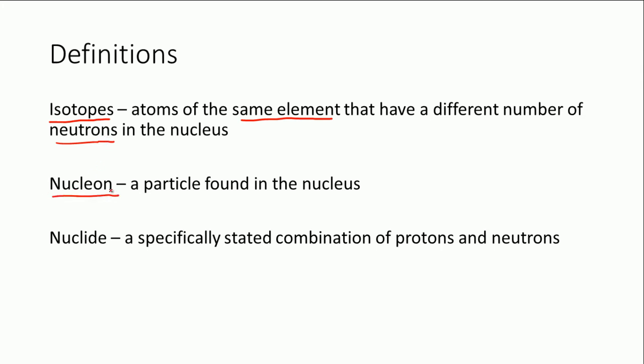A nucleon is the general name for a particle found in the nucleus, so there are only two nucleons: there are protons and there are neutrons. It's a bit like boys and girls both being children. Protons and neutrons are both nucleons. A nuclide is defined as a specifically stated combination of protons and neutrons, so a specific isotope of a particular element. So carbon-12 is a nuclide, and that has six protons and six neutrons. So there's a carbon-12 nuclide, which is a nucleus of a carbon-12 isotope.